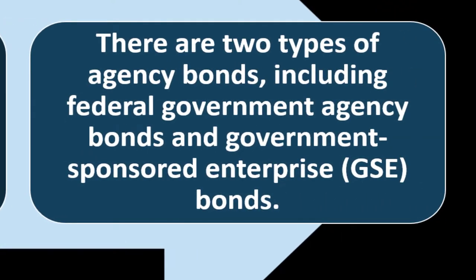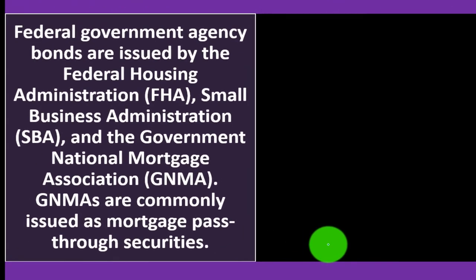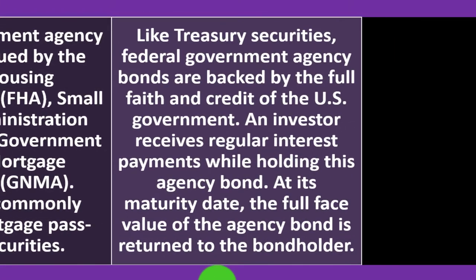There are two types of agency bonds: federal government agency bonds and government-sponsored enterprise (GSE) bonds. Federal government agency bonds are issued by the Federal Housing Administration (FHA), the Small Business Administration (SBA), and the Government National Mortgage Association (GNMA). GNMAs are commonly issued as mortgage pass-through securities.